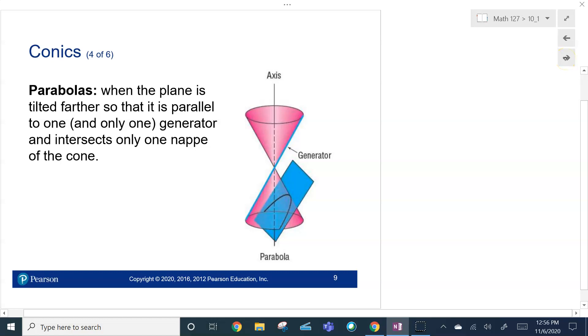A parabola. So, we're going to tilt this so that it's parallel to a generator, and it intersects only one nappe. Again, you see the ellipse right there. No, I'm sorry, the parabola right there.